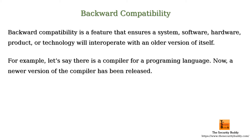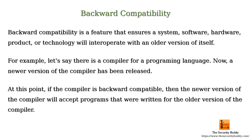For example, let's say there is a compiler for a programming language. Now, a newer version of the compiler has been released. At this point, if the compiler is backward compatible, then the newer version of the compiler will accept programs that were written for the older version of the compiler.